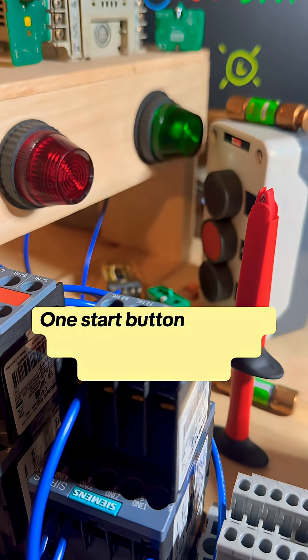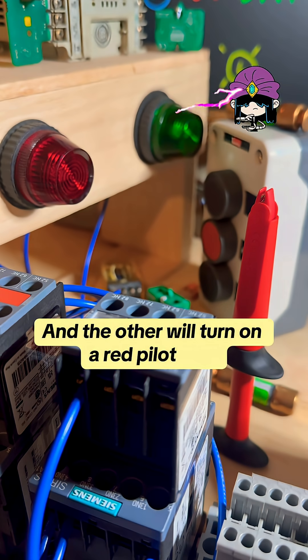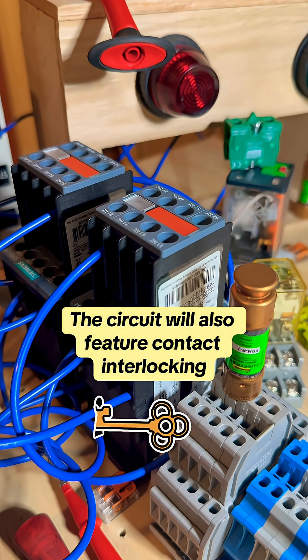One start button will be in charge of energizing a green pilot light and the other will turn on a red pilot light. The circuit will also feature contact interlocking.